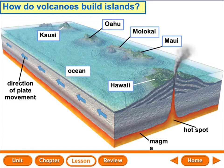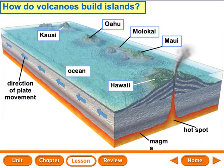In areas where one ocean floor plate is pushed under another ocean floor plate, an island arc forms. As the plate is pushed down, it melts, magma forms, rises upward, and erupts through the ocean floor. These eruptions form a series of volcanic islands along the plate boundary. The Aleutian Islands in Alaska form an island arc. In this lesson we learned how volcanoes form islands, build land and mountains, and where they are found — usually at plate boundaries where one plate is pushed under another. If you have any questions, feel free to ask or message on Edmodo.